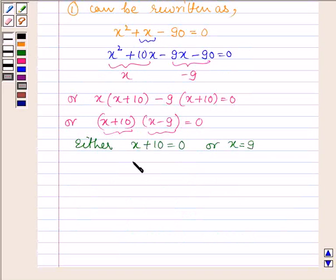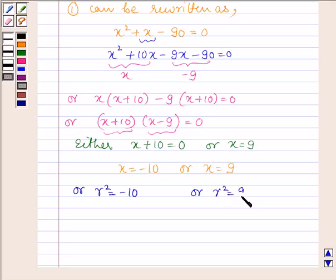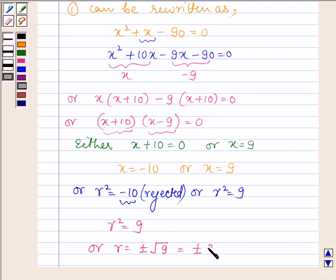So this further implies that x equals -10 or x equals 9, which means r² equals -10 or r² equals 9. Now, the negative value is rejected since it will result in a complex number as the ratio. So we have r² equals 9 or r equals plus or minus 3.